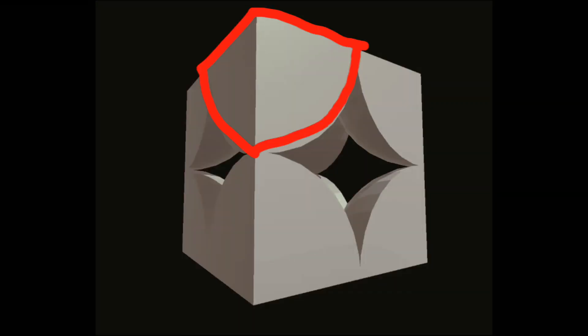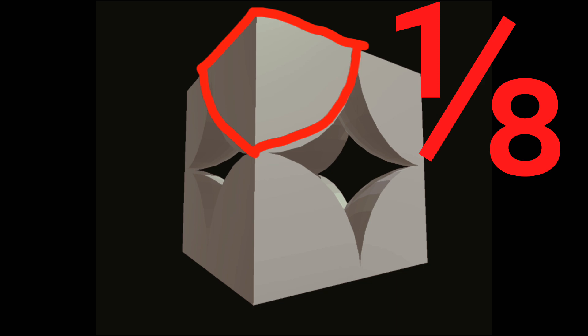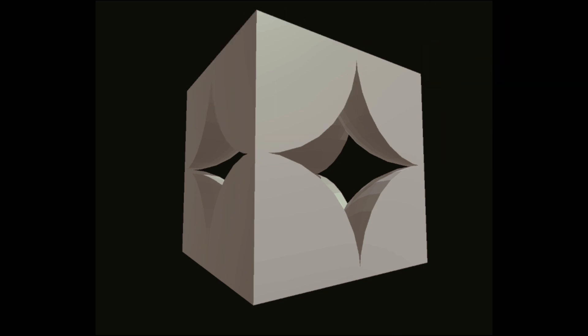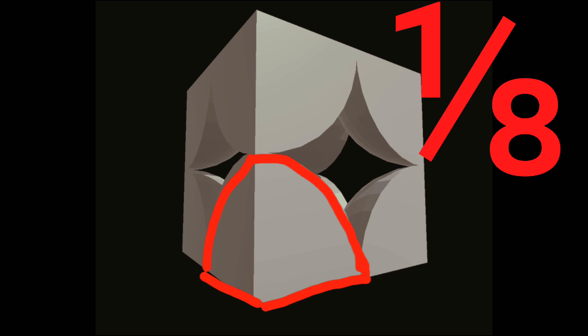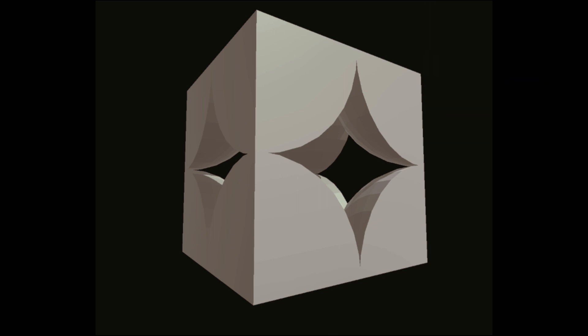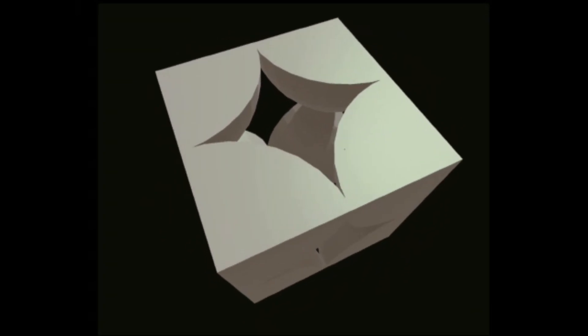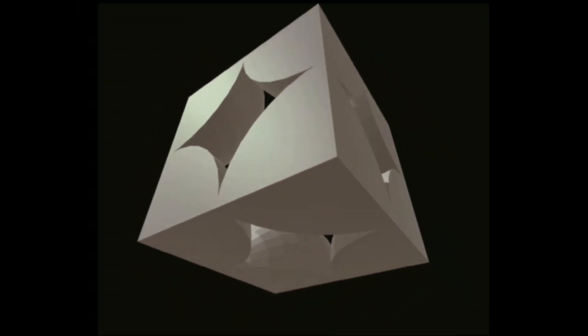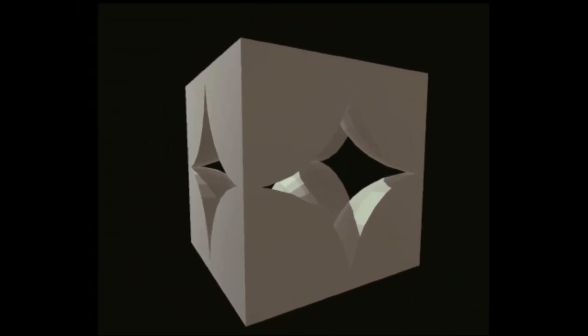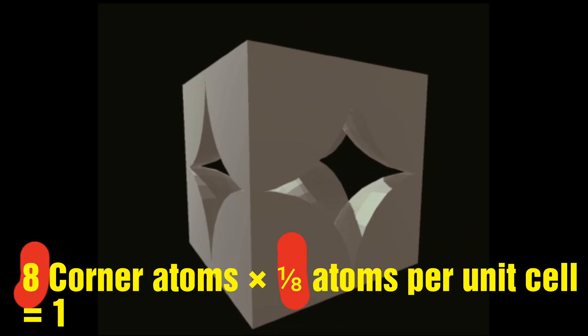This portion of the atom is one-eighth of the entire atom. This portion also contributes one-eighth part of the entire atom, and so on. Therefore, the number of atoms in the simple cubic cell is eight corner atoms multiplied by one-eighth atoms per unit cell, which equals one.